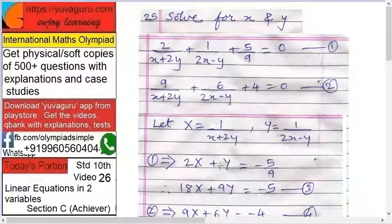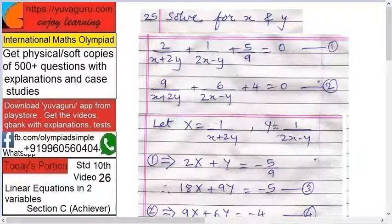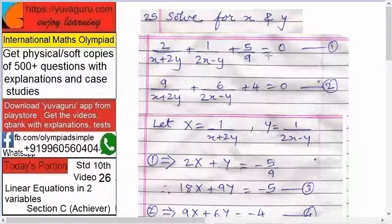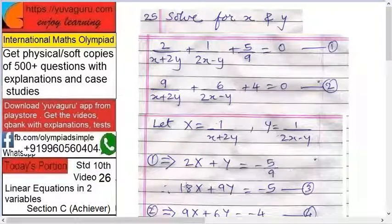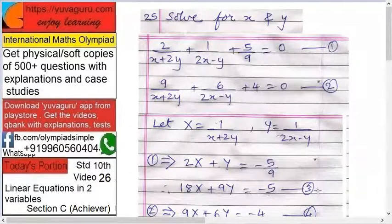2 into capital X plus Y, this one equals to minus 5 by 9. Therefore solve this, take 9 on the other side, you get 18X plus 9Y equals to minus 5. Make this